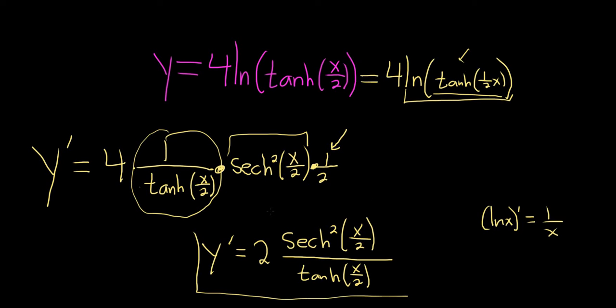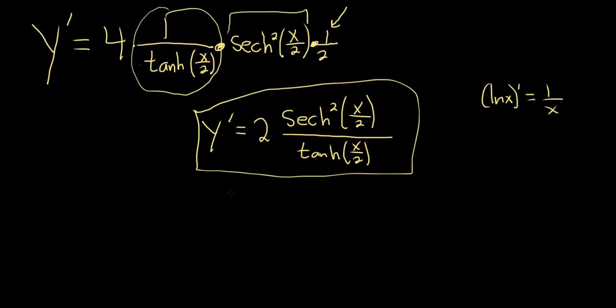I suppose you could stop here, and this would be an acceptable answer, but just for fun, let's see if we can keep going a little bit more. I'm going to change color here. I'm just curious if this simplifies. So this is 2. The hyperbolic secant is 1 over the hyperbolic cosine. This will be 1 over cosh squared of x over 2.